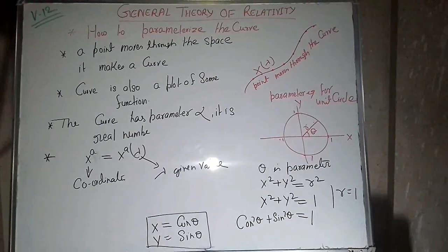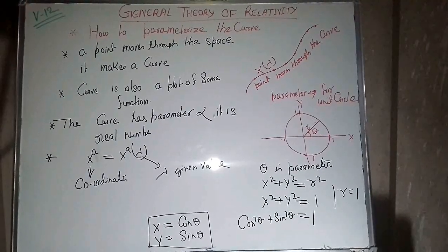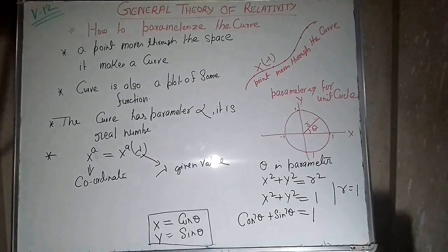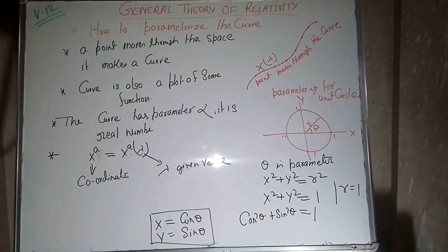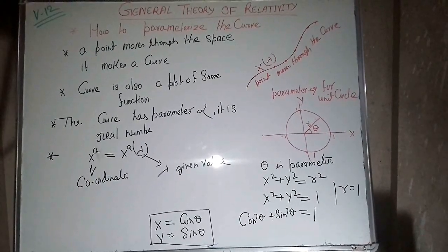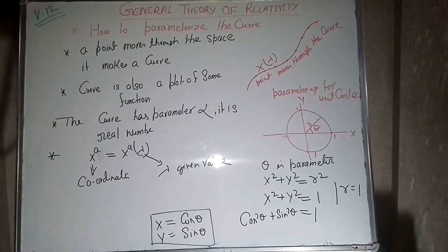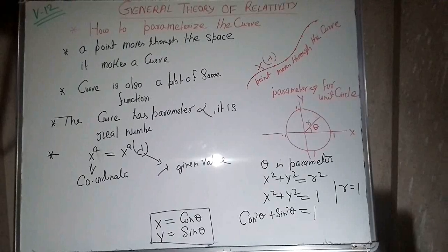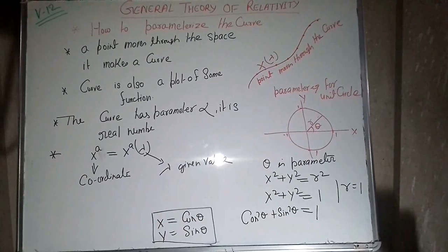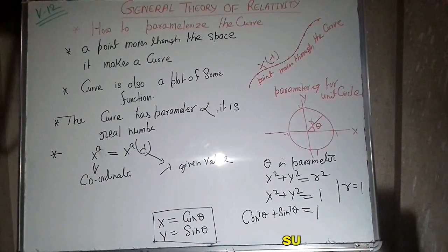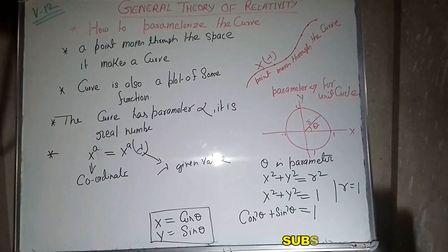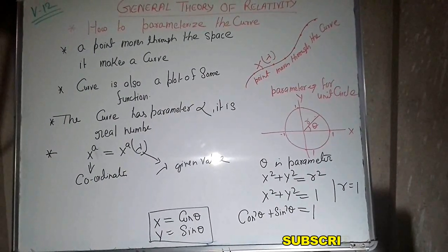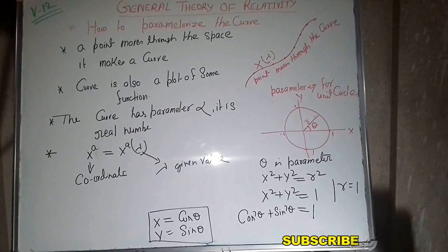Hello and welcome. This is another video on general relativity. In this video I am going to explain the parameterization of the curve. General relativity is all about the curvature of space and time — it means any point in space or in time makes a curve while in motion. So we have to parameterize the curve.